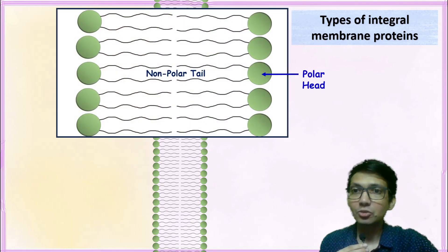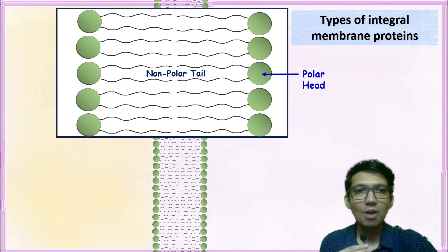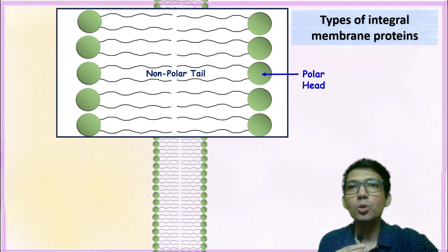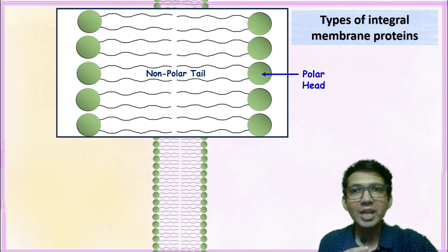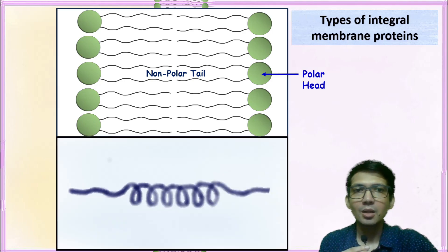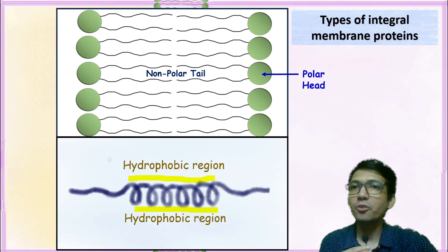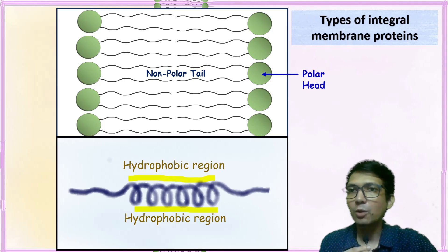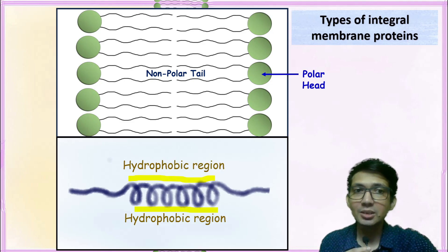If you look at the structure of the lipid bilayer of the plasma membrane, it has a polar head which loves to be in water and a non-polar tail which hates to be in water. Most integral membrane proteins have a hydrophobic region which allows them to interact with the hydrophobic region of the lipid bilayer, and because of this interaction, they remain inside the membrane.